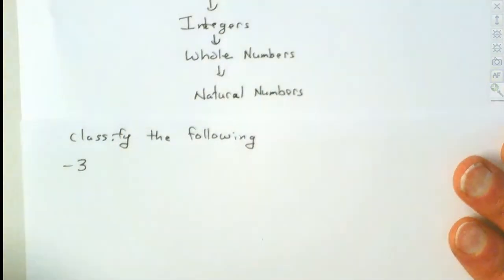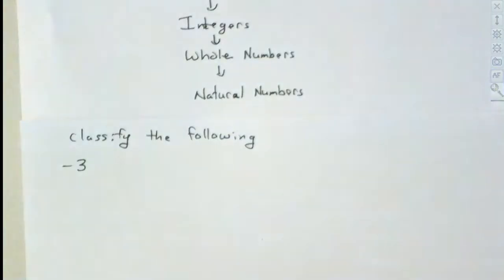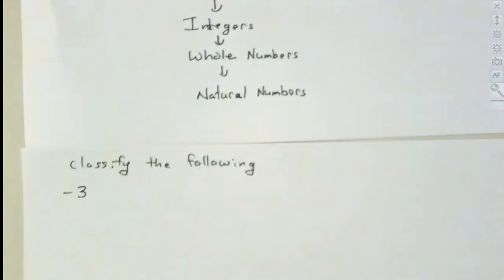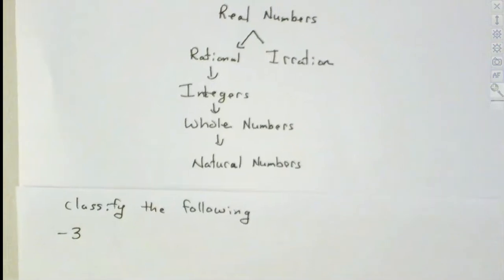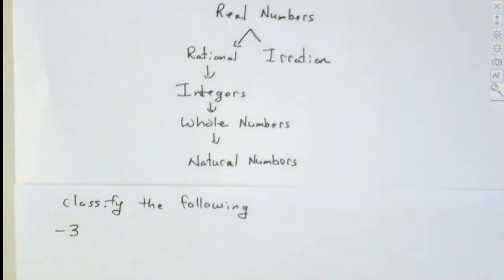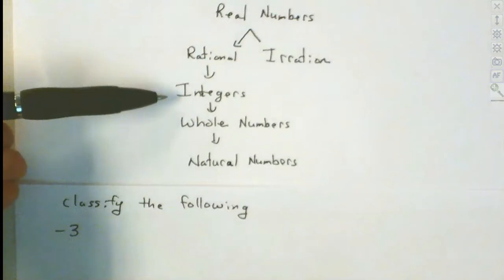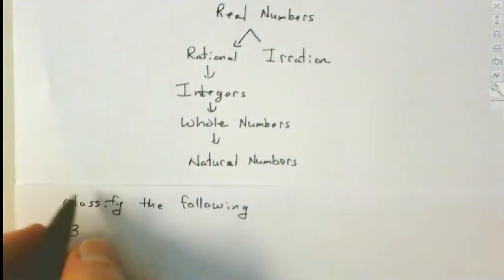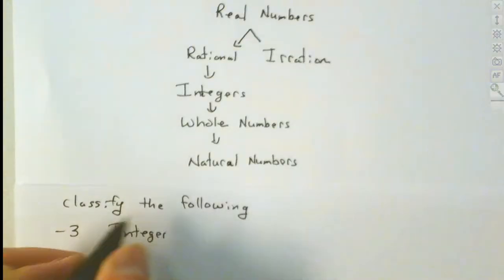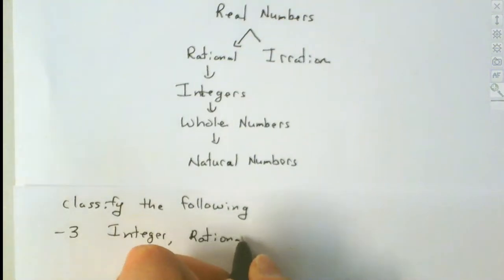Let's start with negative three. I always start at the bottom and work my way up. Is negative three a natural number? Natural numbers — you have to be able to count how many fingers. Do you have negative three fingers? No. So it's not a natural number. Is it a whole number? No, because those have to also be positive or zero. Is negative three an integer? Yes. So it's an integer, it's rational, and it's also real — because everything is real.